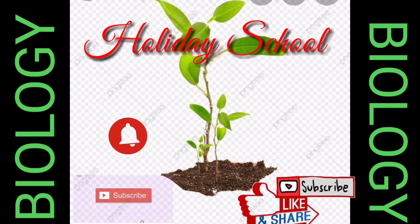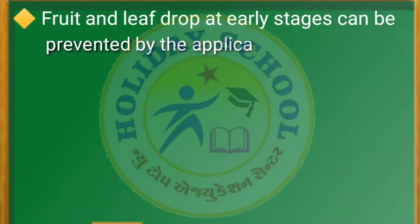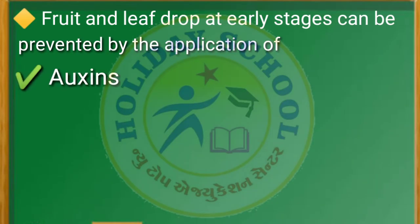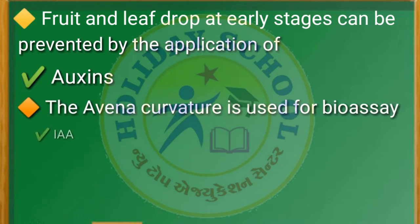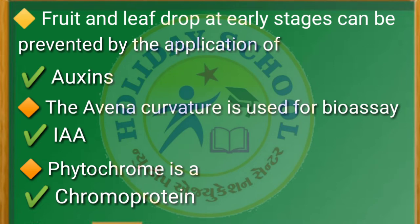Let's start our questions. The question is: fruit and leaf drop at early stages can be prevented by the application of — the answer is auxins. Next question: the avena curvature test is used for bioassay of — the answer is IAA.